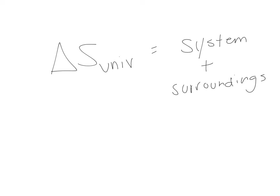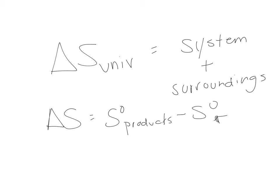We have already talked about how to get to the delta S of our system. We just take the standard entropy of our products minus the standard entropies of our reactants, and that gets us to the overall entropy change of our system.